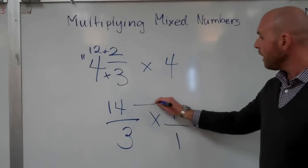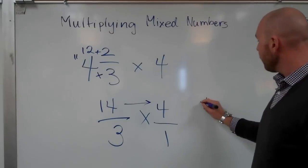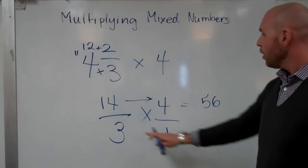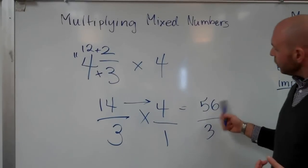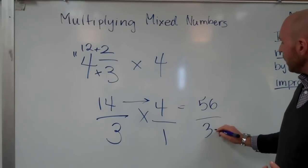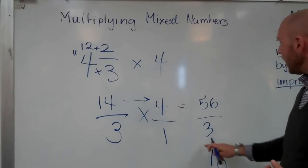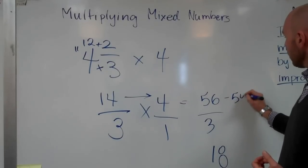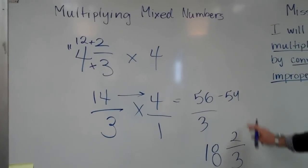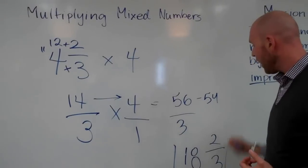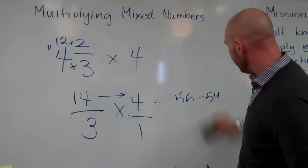Now I'm ready to multiply. I multiply my numerators: fourteen times four is fifty-six. Three times one is three. How many times does three go into fifty-six? Eighteen times. Eighteen times three is fifty-four. Fifty-six take away fifty-four is two. So the answer is eighteen and two-thirds. Remember, it's all about the steps — you've got to get to that simplified mixed number as your answer.